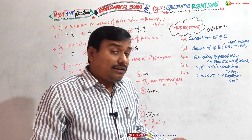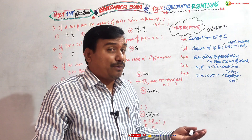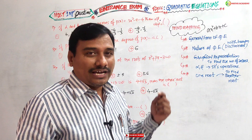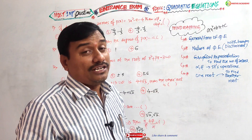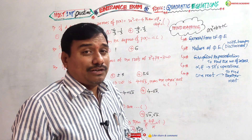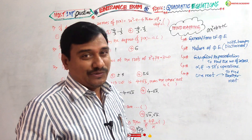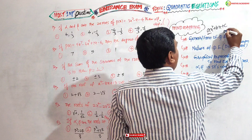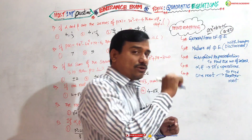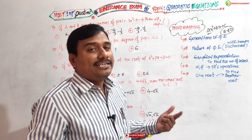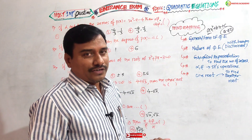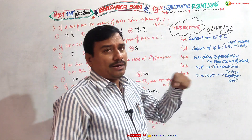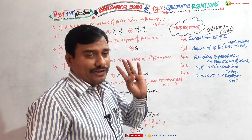Or else, we can say that P of X is any polynomial having degree 2, then it is called a quadratic polynomial. If it equals zero, then it is called a quadratic equation. Otherwise it is a linear equation. Here A, B, C belong to real numbers.